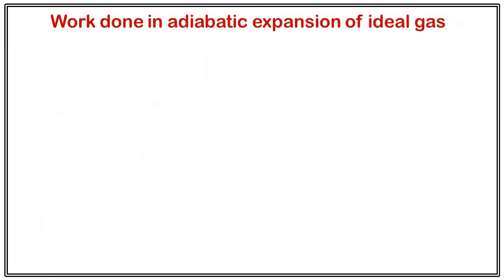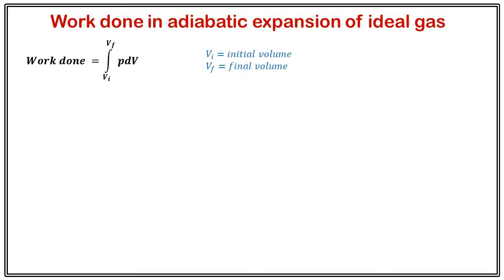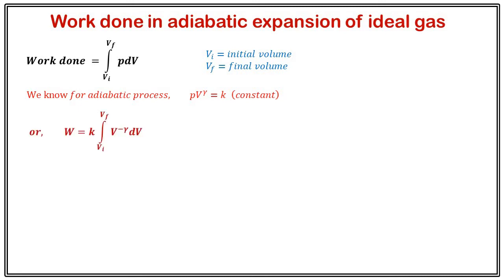Next we derive work done in an adiabatic expansion of an ideal gas. An adiabatic process is one in which there is no heat exchange between the system and its surroundings. Work done is the integration over Vi to Vf of p dV. Using the adiabatic relation derived in the last lecture, pV^γ = k (a constant), where γ = Cp/Cv, we replace p with k·V^(−γ). Since k is constant it comes outside the integral.